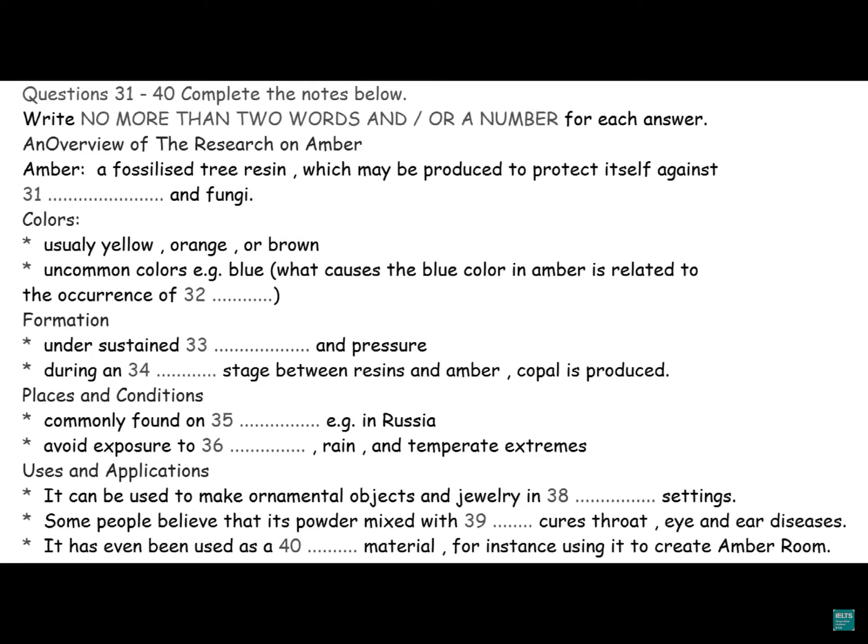First of all, what is AMBER? AMBER is not a stone, but is ancient fossilized tree resin, which is the semi-solid amorphous organic substance secreted in pockets and canals through epithelial cells of the plant. And why is resin produced? Although there are contrasting views as to why resin is produced, it is a plant's protection mechanism. The resin may be produced to protect the tree from disease and injury inflicted by insects and fungi.